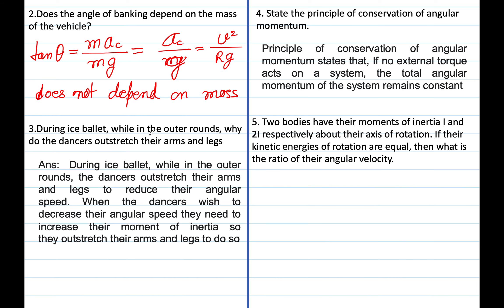Question number 5: Two bodies have their moment of inertia I and 2I respectively about their axis of rotation. If their kinetic energies of rotation are equal, what is the ratio of their angular velocity? Kinetic energy means ½ I ω₁² = ½ (2I) ω₂². Cancel ½ and I. ω₁² = 2ω₂². So ω₁ = √2 ω₂. The ratio ω₁/ω₂ equals √2.